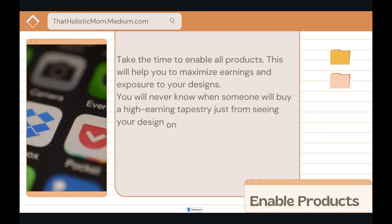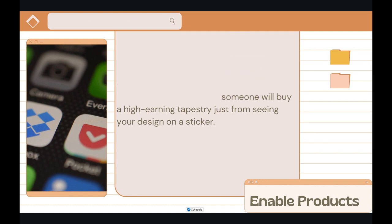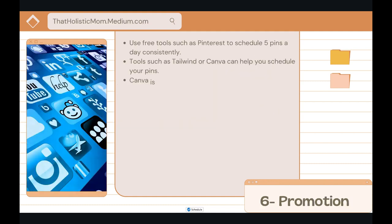Step five: enable all products. This step is super important — you don't understand how much it can change your sales. Take the time to enable all products step by step. It will help maximize your earnings and exposure to your designs. You'll never know when someone will buy a high-earning tapestry just from seeing your design on a $3 sticker.